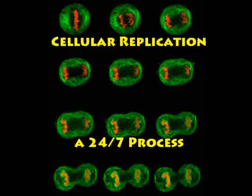It has a diploid chromosome number, 2N. Mitosis is used primarily in tissue growth, repair, and replenishment.